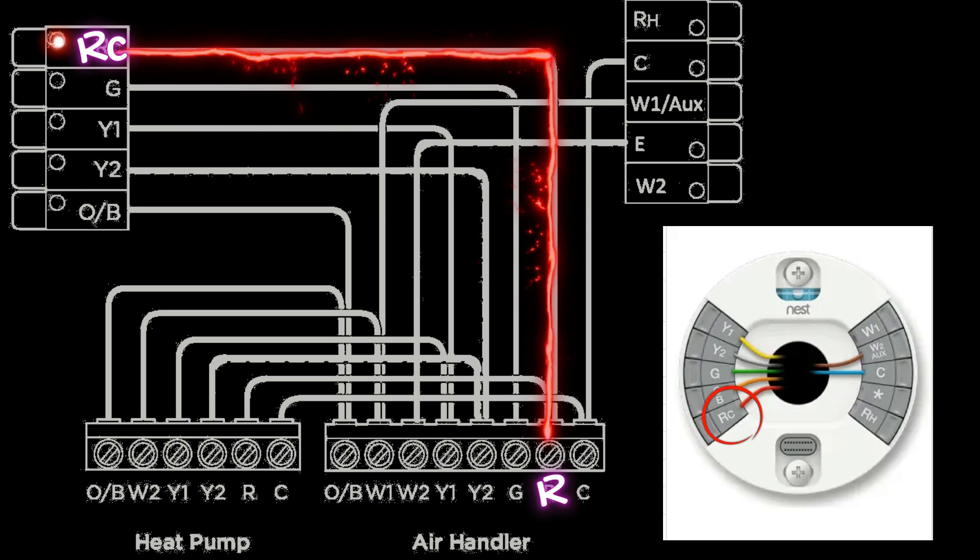Now the whole point of this wire is to get power up to the thermostat because each of the terminals on the thermostat, when they're energized, turn on different components in the system. So the thermostat needs to receive power in order to send it back out to turn these things on. And that's what this wire does.